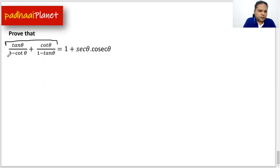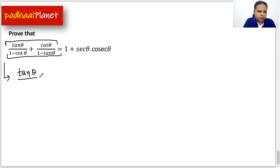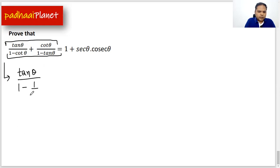Let's start with the left-hand side of this expression. So I'm starting with tan θ over 1 minus cot θ. I'm just converting cot θ into 1 over tan θ. So that's one level of simplification. Then I have plus cot θ, and this cot θ can also be converted into 1 over tan θ.